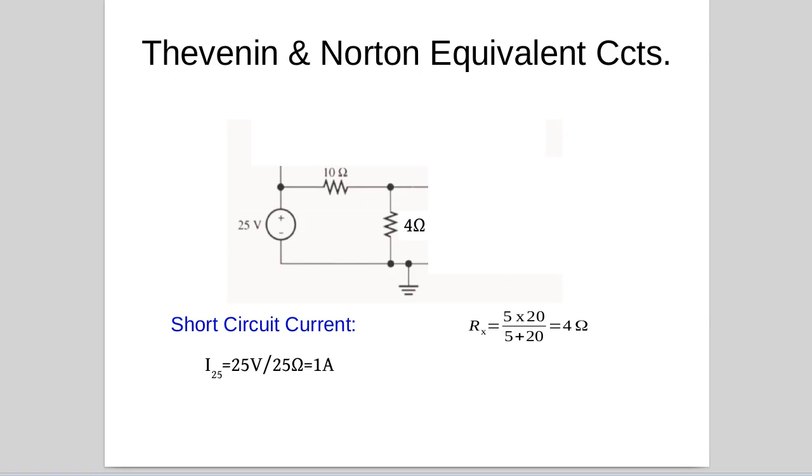So we replace those resistors with 4 ohms and we're down to a series network, 10 ohms in series with 4 ohms. In which case 14 ohms and we need the current in there, and hopefully my maths is correct. 25 volts over 14 ohms, 1.79 amps.